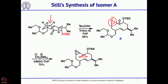Nevertheless, he went ahead and treated with the corresponding sulfonium ylide — trimethylsulfonium ylide — to get the second epoxide. Looking at this compound, one epoxide is of opposite stereochemistry and the second epoxide is also opposite stereochemistry. But it is still useful to make more analogs of the natural product.